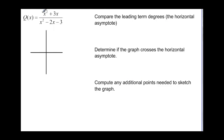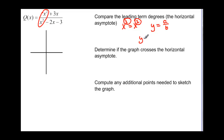Now we compare the leading terms to find horizontal asymptotes. This time the degrees are equal — x² equals x², so the leading coefficients are both 1. When the degrees are the same, y equals a over b. In our case that's y = 1/1, or just y = 1. So our horizontal asymptote is at y = 1. Let's draw a dotted line for that horizontal asymptote, and put in the vertical asymptotes at x = 3 and x = negative 1.